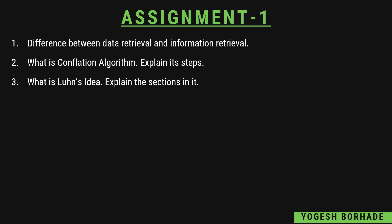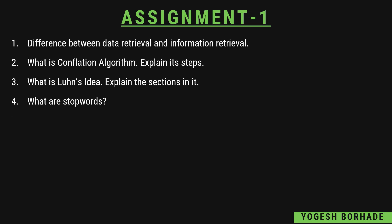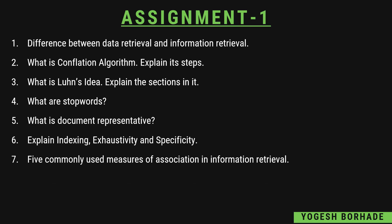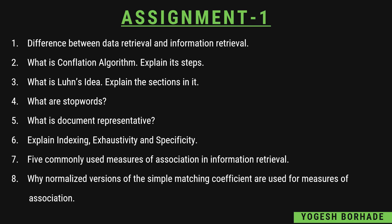What is Luhn's idea and the graph for it is also discussed in those videos. Then what are stop words or common words — you can remember three to five stop words if they ask you. Then what is document representative and how to generate it. Also prepare what is indexing, what are exhaustivity and specificity, and what are the commonly used measures of association. Normalized versions of simple matching coefficients used for measures of association is also important to go through.